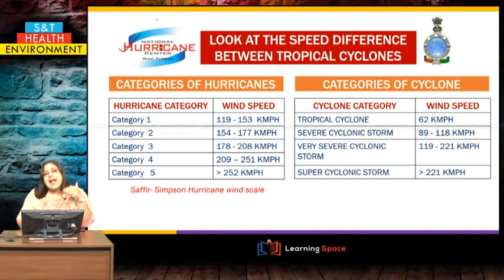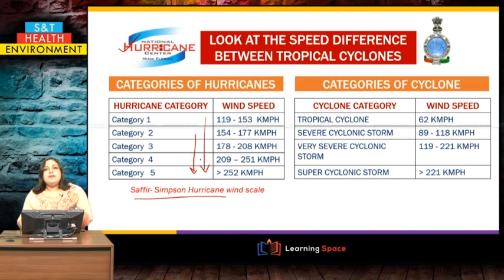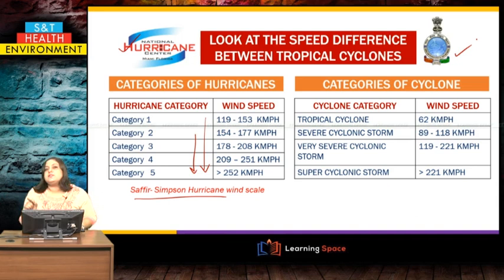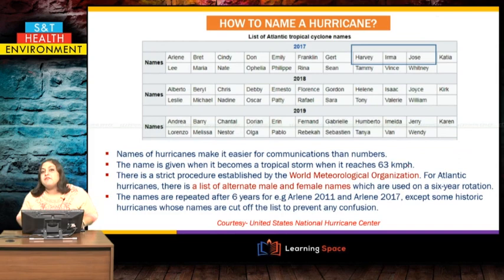Hurricane wind speeds are categorized by the National Hurricane Center using the Saffir-Simpson Hurricane Wind Scale, with categories one to five based on increasing wind speeds. For cyclones in India, wind speed categories are fixed by the Indian Meteorological Department (IMD). Hurricane categories are significantly higher wind speeds, while IMD names cyclones as tropical cyclone, severe cyclone, very severe cyclone, and super cyclone.